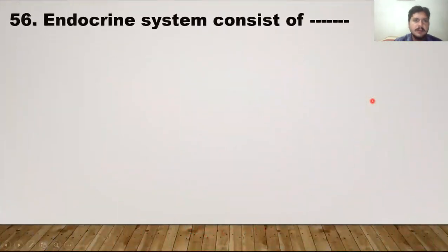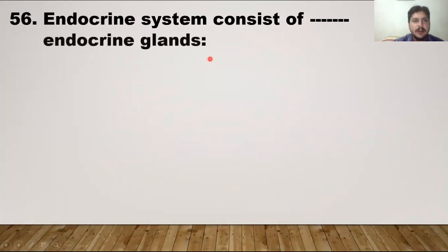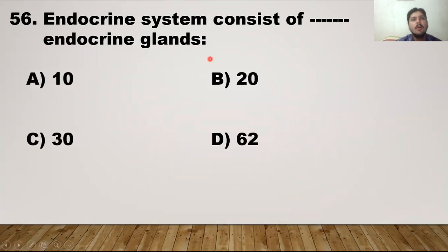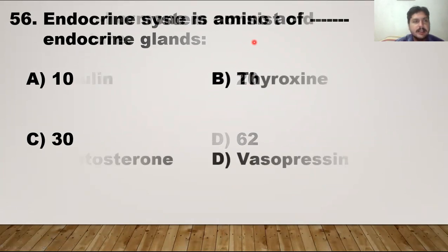The first MCQ is: the endocrine system consists of how many endocrine glandular tissues? The endocrine system consists of almost 20 different kinds of glandular tissues. So 20 is the right answer.